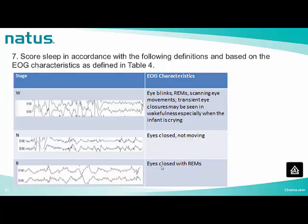The following EOG characteristics should be used for staging. In stage W, EOG shows blinks, rapid eye movements, scanning eye movements, and transient eye closures especially when the infant is crying. In stage N, eyes are closed with no movements, and there is usually some mirroring from the EEG into EOG channels. Stage R is characterized by closed eyes with rapid eye movements.